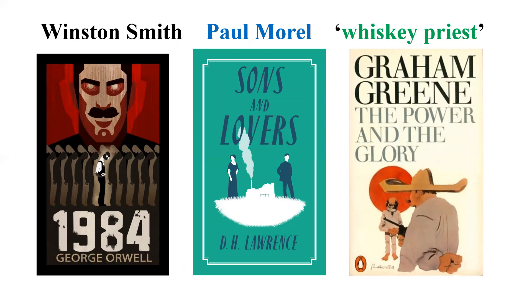Winston Smith is the protagonist of George Orwell's 1984, set in a dystopian society where individuals have no individual identity. There is a 'Big Brother' — an authority figure — under whose surveillance every move is watched. Winston Smith goes against this system, and the novel explores what happens to him.